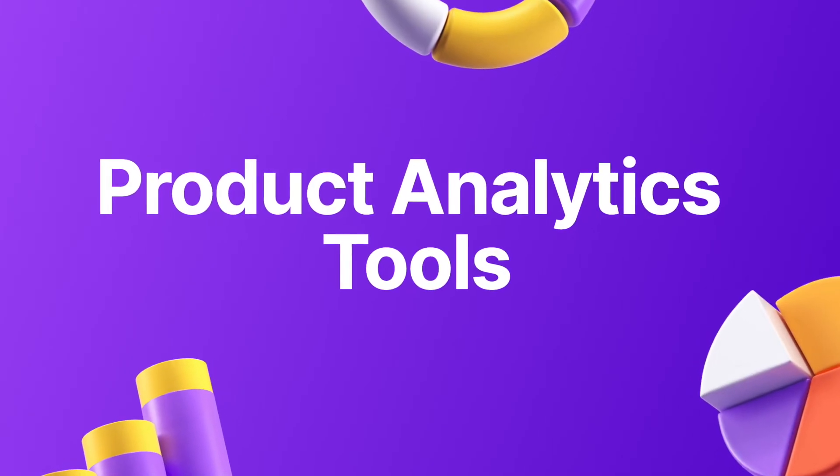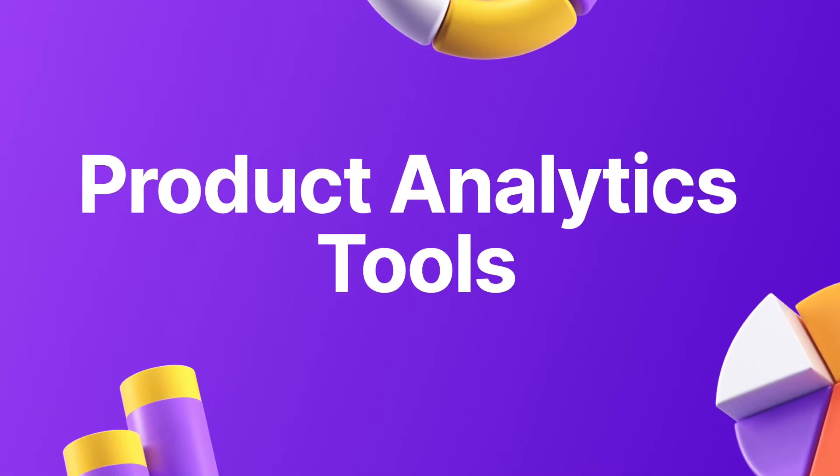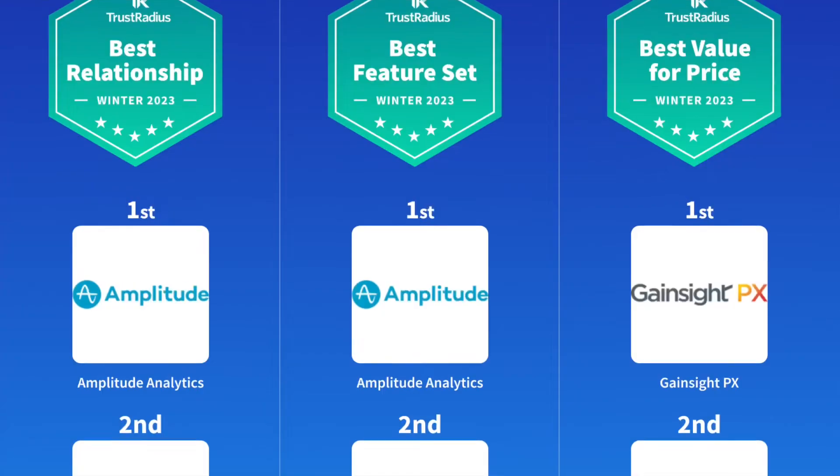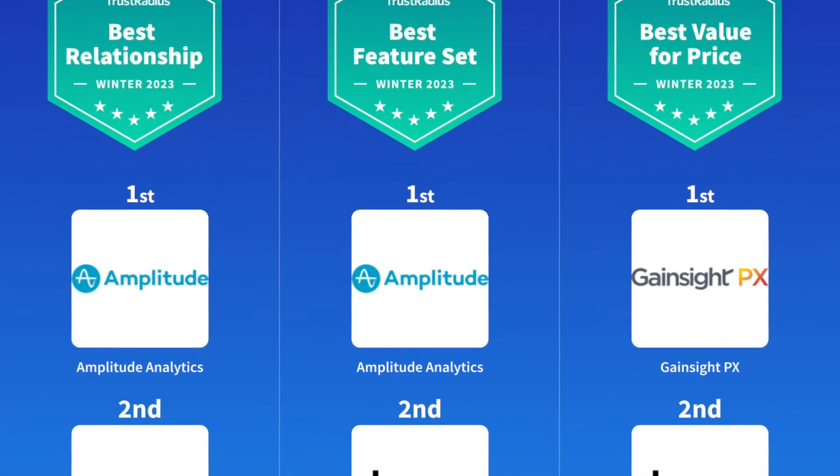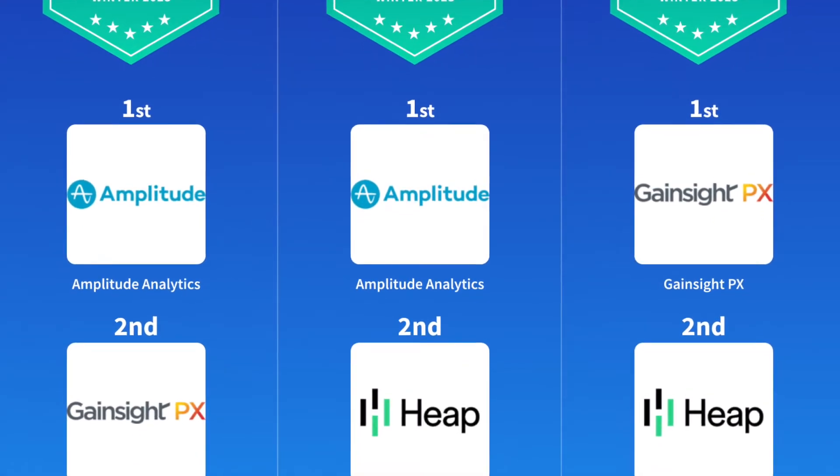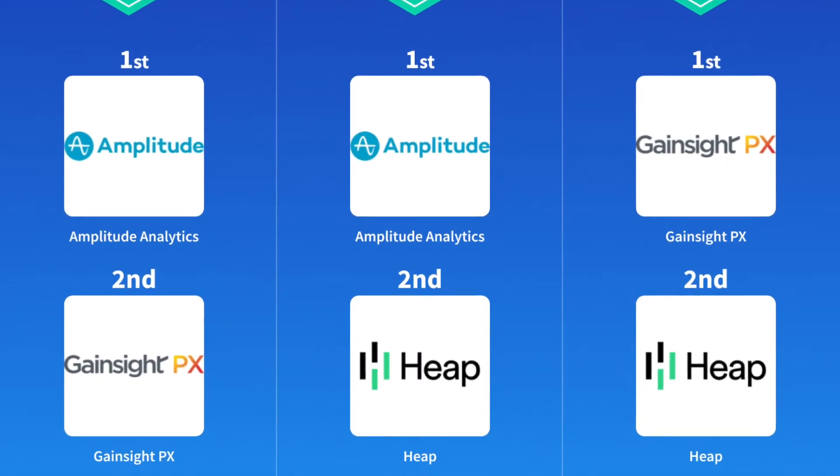Next, let's discuss product analytics tools. These are tools for a single product that help product managers and the business team understand how the product is used by users and how it impacts the business. There are many tools — some examples are Mixpanel, Pendo, and CleverTap.